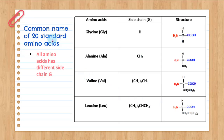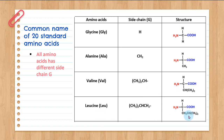In the notes, you have the common names of the 20 standard amino acids, all with different side chains R. For example: glycine has hydrogen as the side chain at the alpha carbon; alanine (ALA) has CH3 as the side chain; valine has an isopropyl group; and leucine has another substituent. You can go through all 20 standard amino acids in the notes — here only four examples are shown.